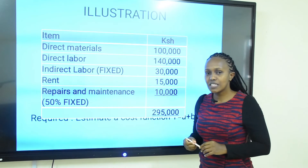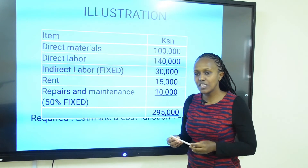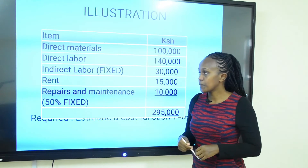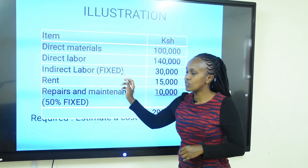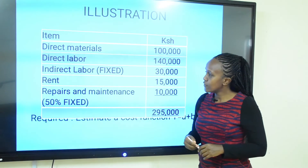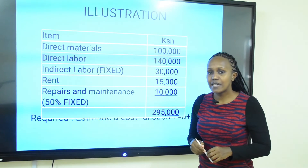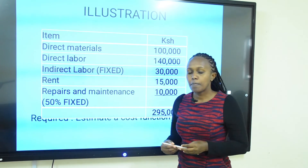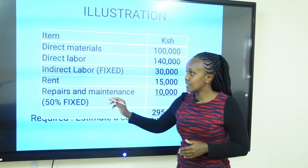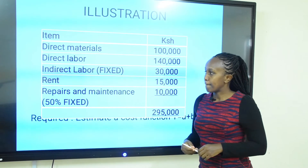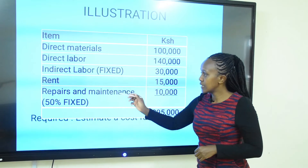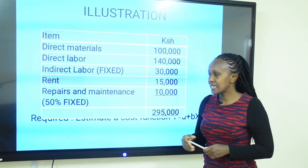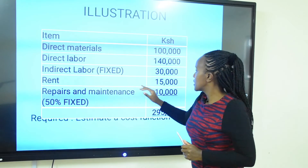Indirect labor has been categorically told to us as fixed — this could be a supervisor's salary that does not depend on how many units were produced. Rent is ordinarily a fixed cost; it does not vary because of production. Whether you produce or not, however many units you produce, rent is a static or fixed cost. For repairs and maintenance, we are told 50% is fixed, meaning the other 50% is variable.